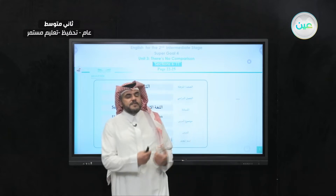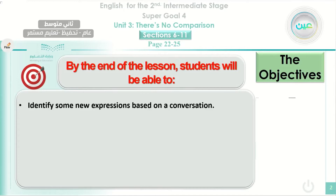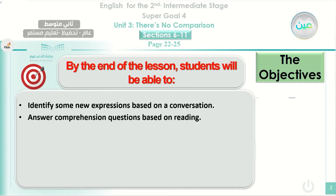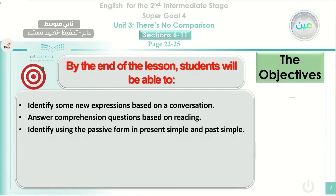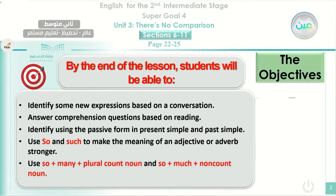Before we start, let's review the objectives of today. Number one, students will be able to identify some new expressions based on a conversation. Also, students will be able to answer comprehension questions based on reading. Students will be able to identify the passive form in present simple and past simple. Also, students will be able to use 'so' and 'such' to make the meaning of an adjective or adverb stronger. The last objective: students will be able to use 'so + many + plural count noun' and 'so + much + non-count noun'.